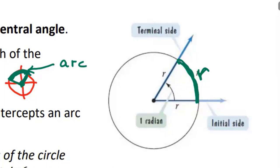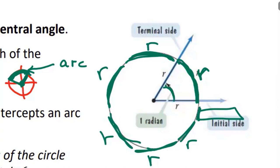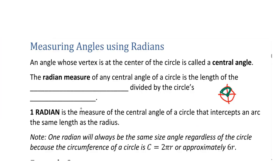Now you might recall that the circumference of a circle is 2π times r. Pi is about 3, so 2π is about 6. So it takes about 6 radii to get around the circle — actually just slightly more because pi is a little bit bigger than 3, so you get 6 and then a little extra piece. So r will fit around the circle 6 times and then a little bit more. One radian is a little less than a sixth of a circle. The radian measure of any central angle of a circle is the length of the intercepted arc divided by the circle's radius.